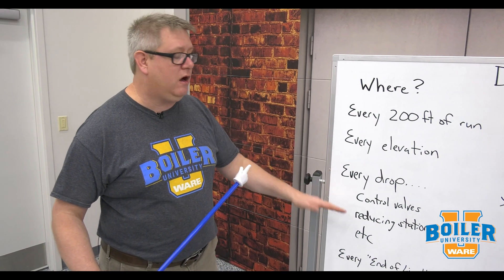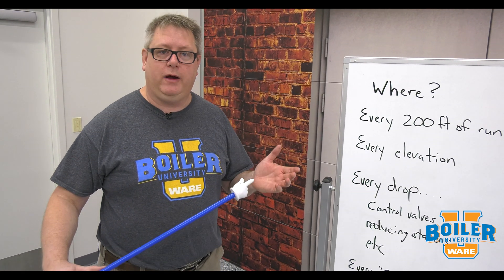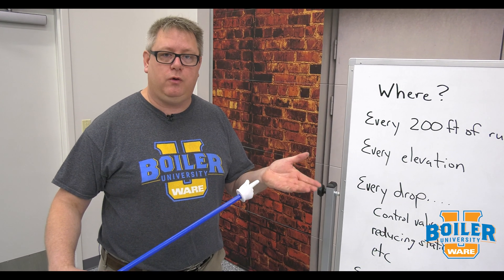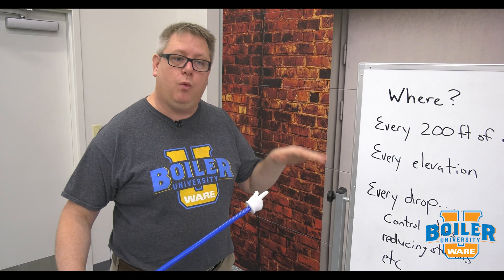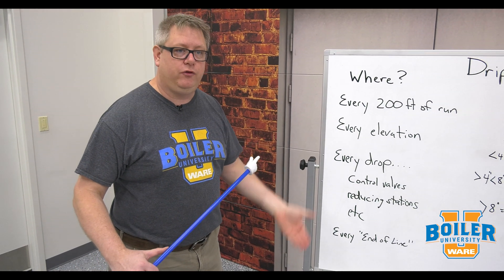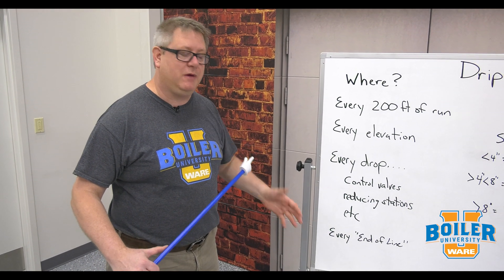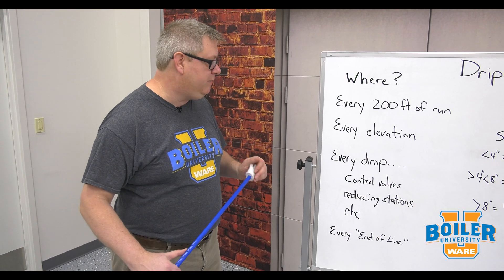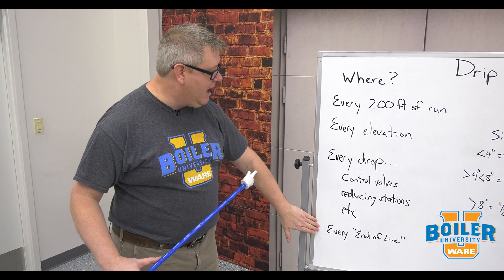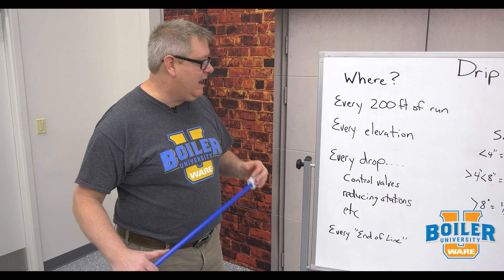Presumably if we've got a control valve, at some point it's going to be closed, and so when it's closed that upstream piping will flood with condensate. So the drip leg and trap keep that clear.